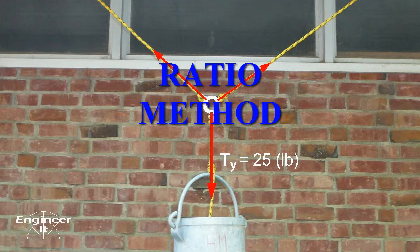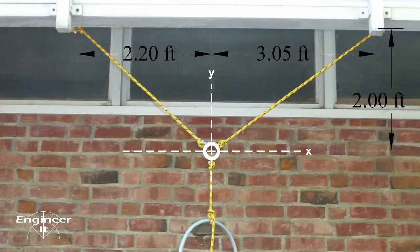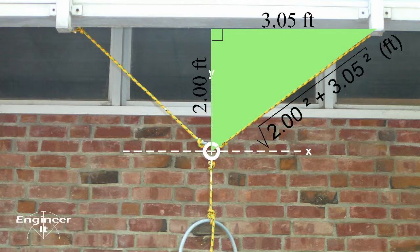The third method is the ratio method that uses similar triangles relating geometry to vector directions. Measurements are still required, but this time compute the hypotenuse of the right triangle using the Pythagorean theorem.